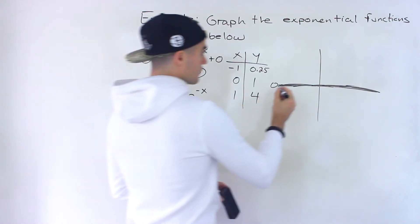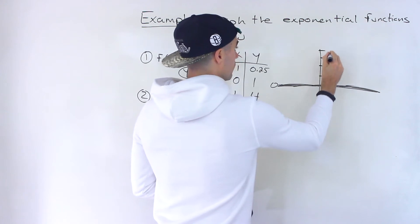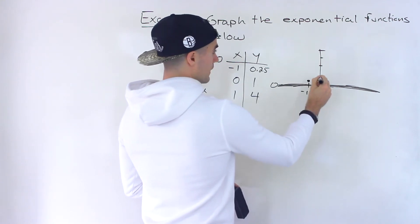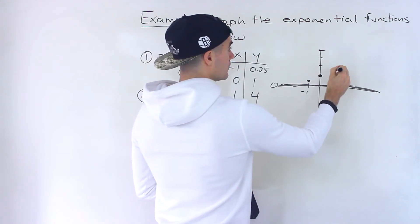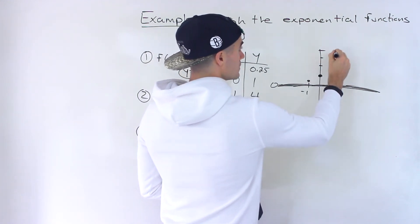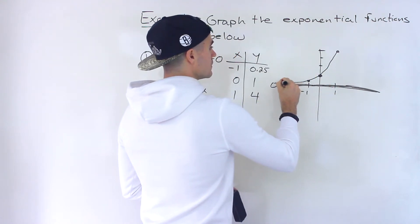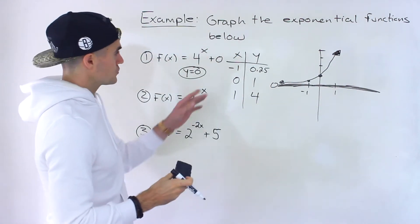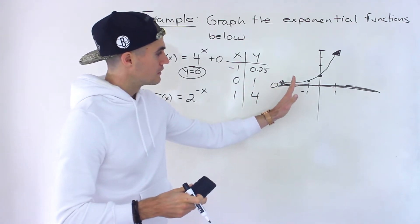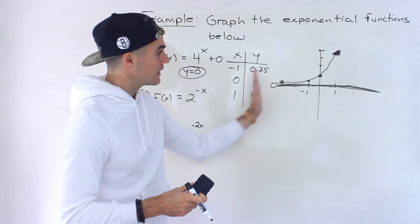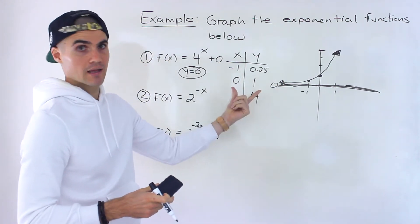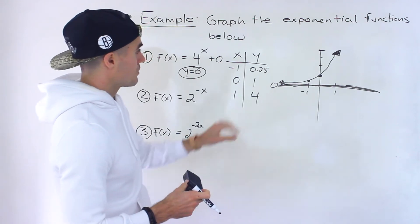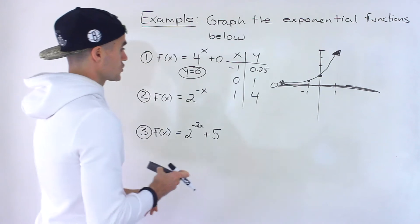Now we can plot the points. We'll have negative one and 0.25 over here, zero and one here, and one and four up here. Connecting all of these, we get the exponential curve. As x approaches negative infinity — plugging in more negative x values like negative 10 or negative 100 — you get smaller and smaller y values, but it never hits zero. It never touches that horizontal asymptote.